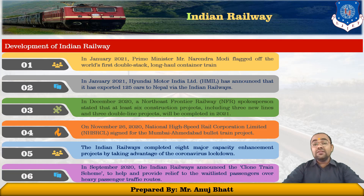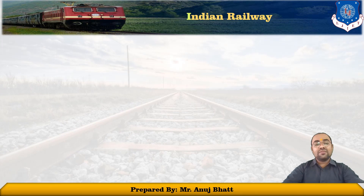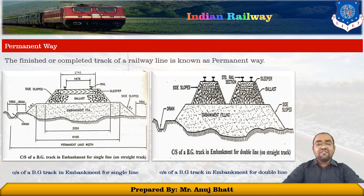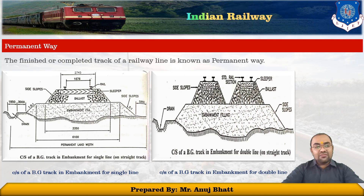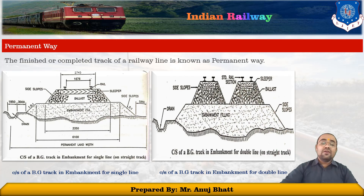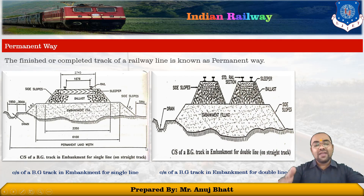Now we move to some technical terms regarding railway lines. First, we will discuss the permanent way. A finished or completed track of a railway is known as a permanent way. In this figure you can see the single line and double line path of the railway, wherein you can see the permanent width from one point to the other. This is the permanent way, or the width of the permanent way.